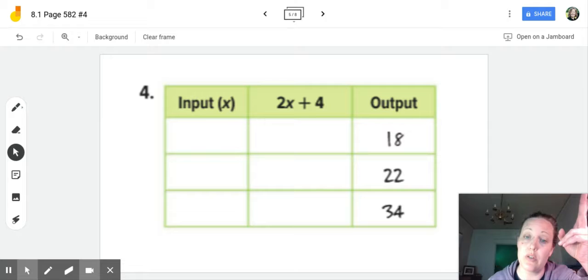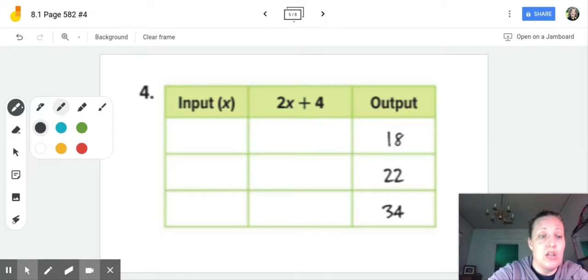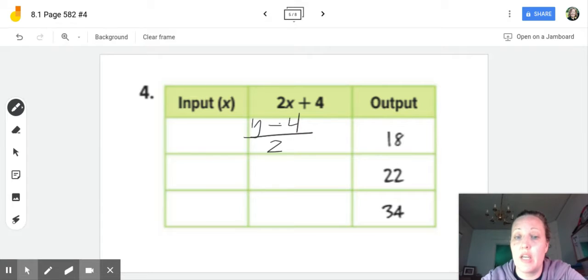So order of operations says we multiply first and then add. We're going to go backwards, so we're going to do the inverse of adding four, and so we're going to first subtract four. So our new function is our output y, and we're going to subtract four, and then we're going to undo multiplication, and instead we're going to divide by two.